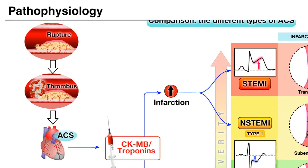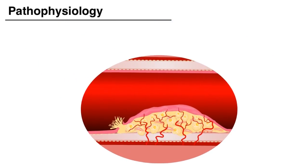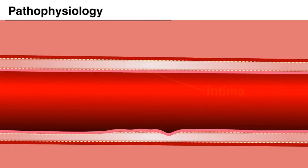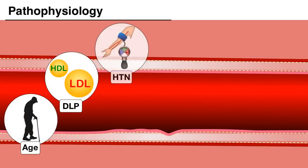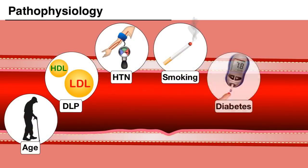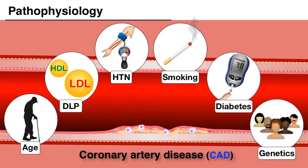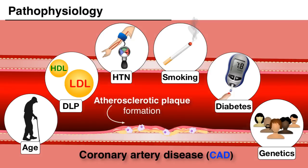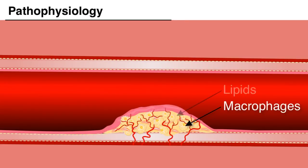Acute coronary syndromes are caused by an acute rupture of a coronary plaque with subsequent thrombus formation. Here is a section of a normal coronary with its three layers: the intima, the media, and the adventitia. With age and other risk factors such as high cholesterol, hypertension, smoking, diabetes, a positive family history or genetic predisposition, coronary artery disease may develop with atherosclerotic plaque formation.